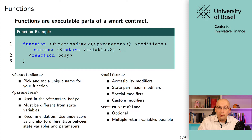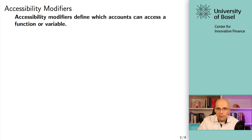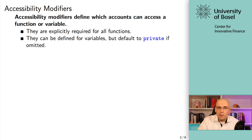The next thing we're going to look at are accessibility modifiers. Accessibility modifiers define which accounts can access a function or a variable — essentially, they define who can interact with the function and therefore with the smart contract. They are explicitly required for all functions, and they can be defined for variables, but don't have to be. If they are not defined for variables, then you have a default value which is set to private. Here you have a table showing the different keywords: private, internal, external, and public.